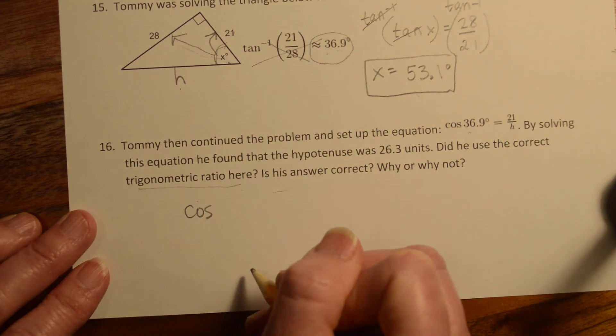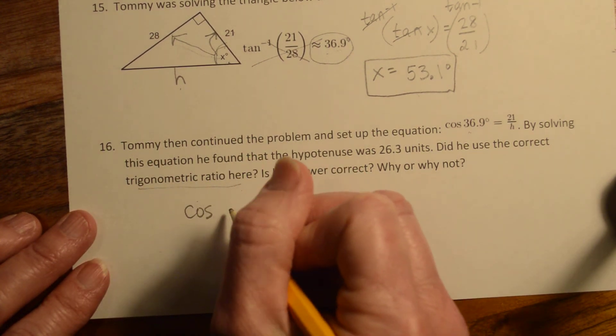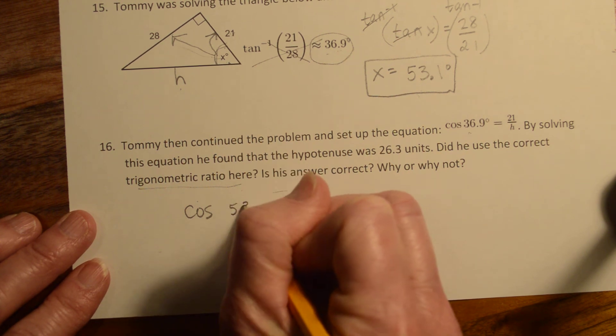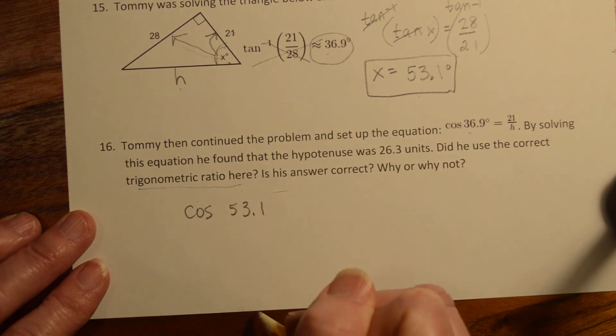Like he's saying, it's actually 53.1. So did he use the correct ratio? Yes. He used cosine or the correct trig ratio. Yes. But it should be cosine of 53.1, not 36.9.